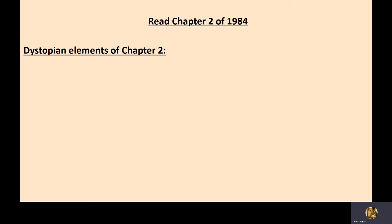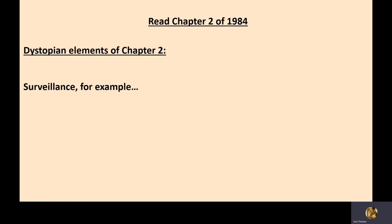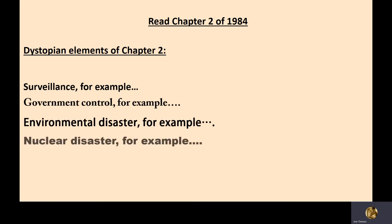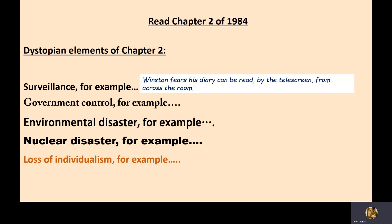Could you make the subheading 'Dystopian elements of chapter two'? I'm going to give you four statements to copy and complete. The four elements are: surveillance, government control, environmental disaster/nuclear disaster, and loss of individualism. The first one is filled out for you as an example — Surveillance: Winston fears his diary can be read by the telescreen from across the room. Now complete the rest.